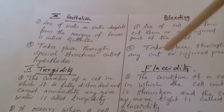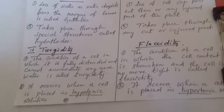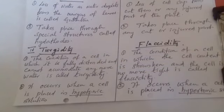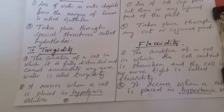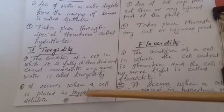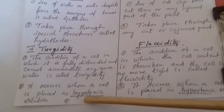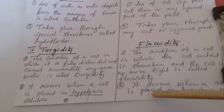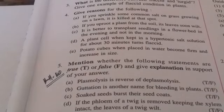Next: turgidity and flaccidity. Turgidity — the condition of a cell in which it is fully distended and cannot accommodate any more water. Flaccidity — the condition of a cell in which the cell content is shrunken and the cell is no more tight. Turgidity occurs when a cell is placed in hypotonic solution; flaccidity occurs when a cell is placed in hypertonic solution.